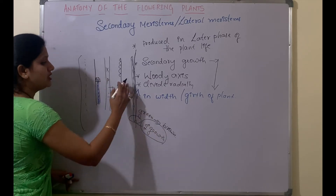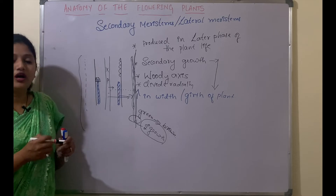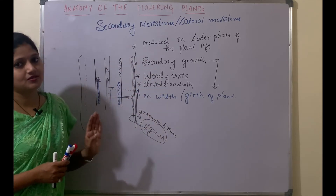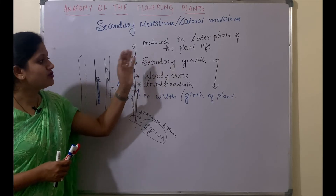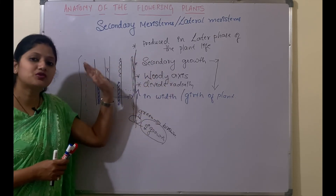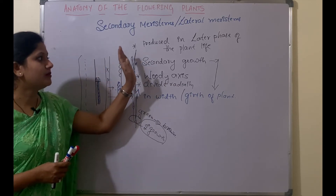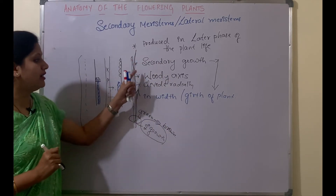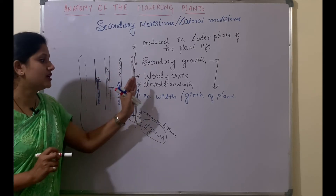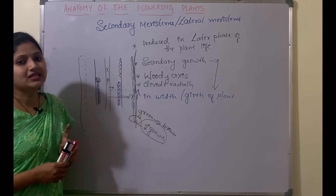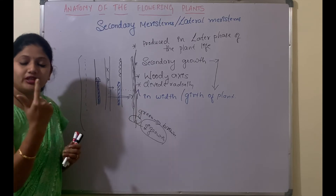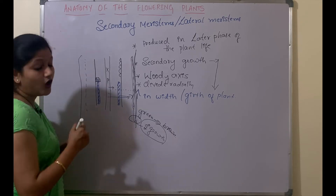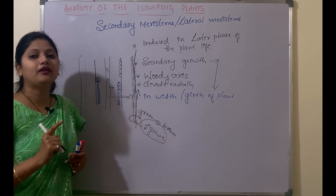We will see the details of secondary growth in the secondary growth classes. For now, just remember that secondary meristems are also called lateral meristems and they are produced in the later phase of the plant life — hence called secondary meristems. If they were produced in the early phase, they would be called primary meristems. They are responsible for secondary growth, which gives the woody axis to the plant body. They usually divide radially, and are not present in all plants — only in those which show a woody axis.